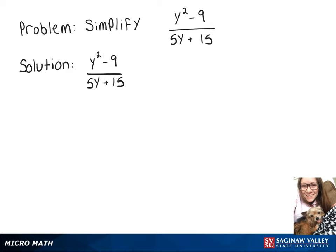In this video we want to simplify y squared minus 9 over 5y plus 15. On top we have a difference of squares, so we can rewrite that as y plus 3 times y minus 3. And on the bottom we can factor out a 5, which leaves y plus 3.